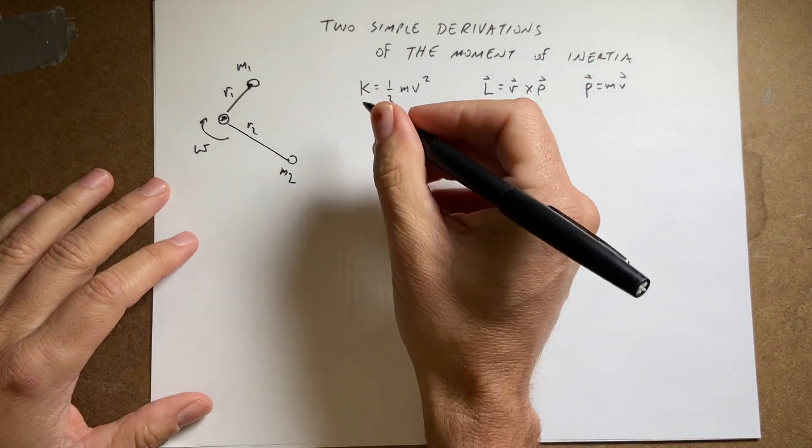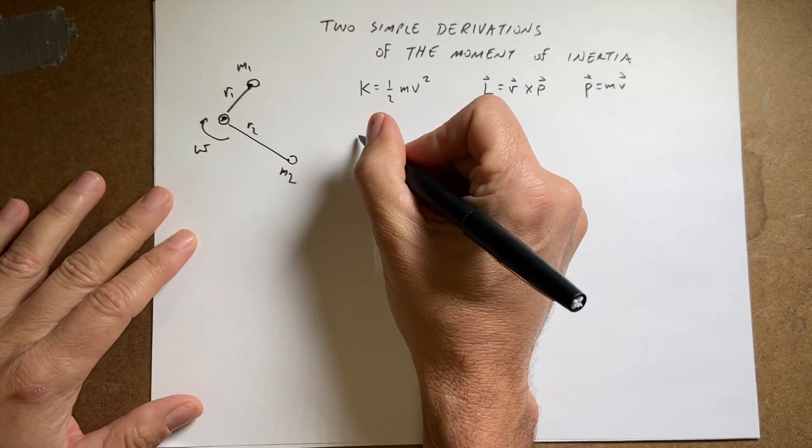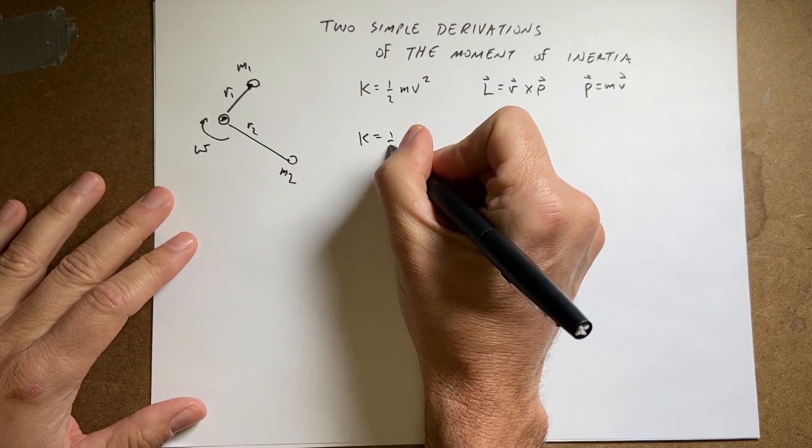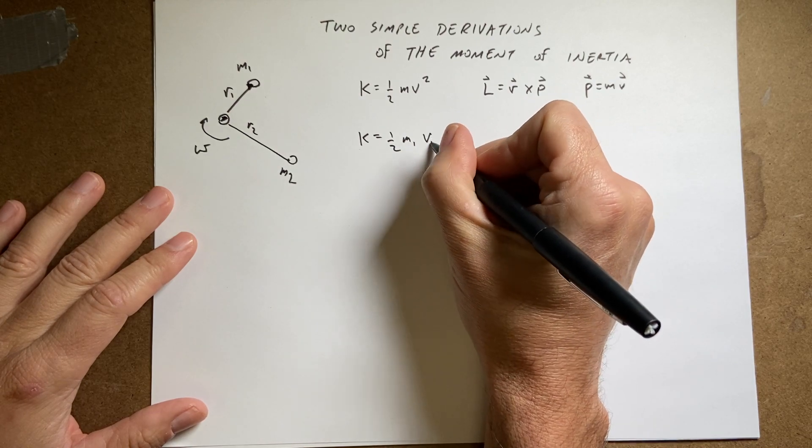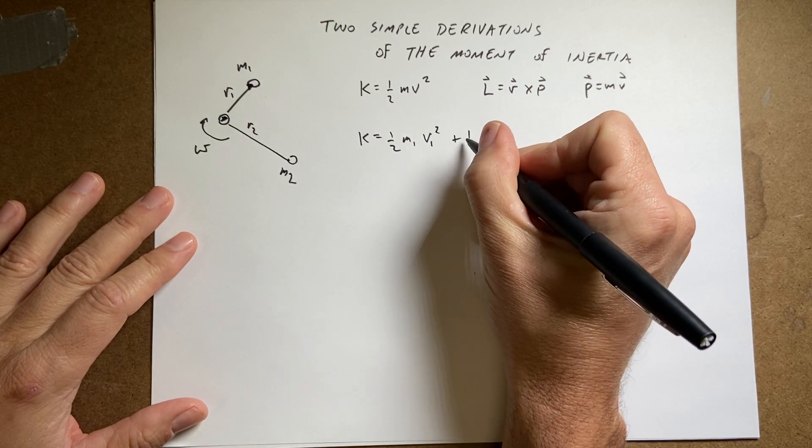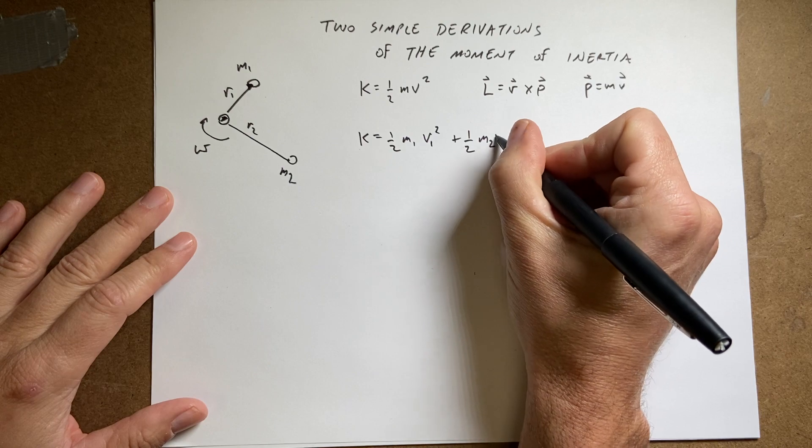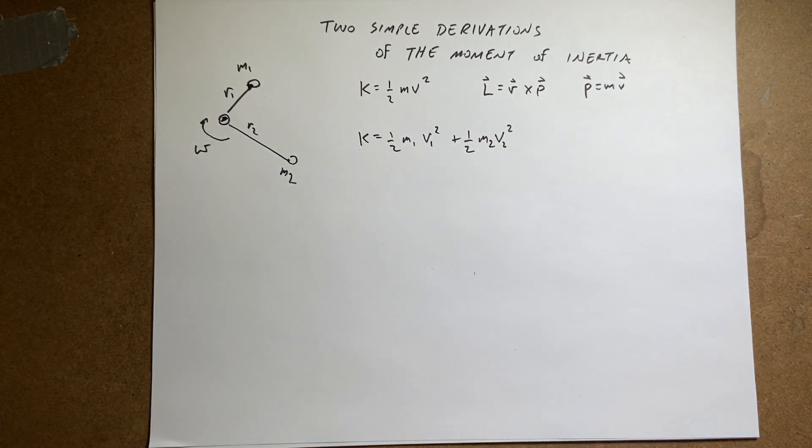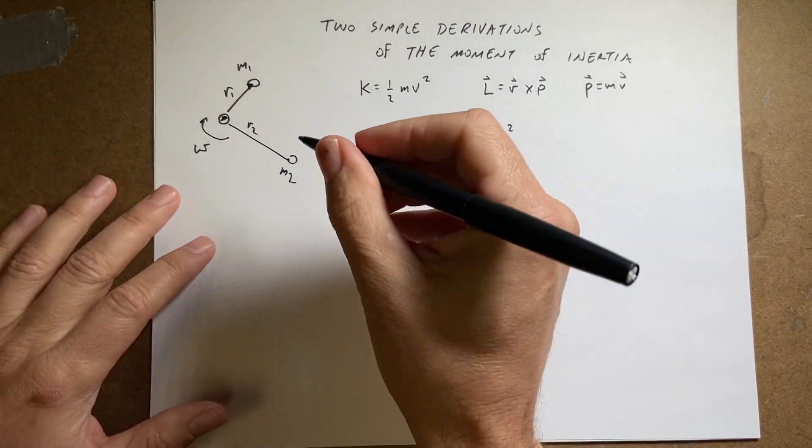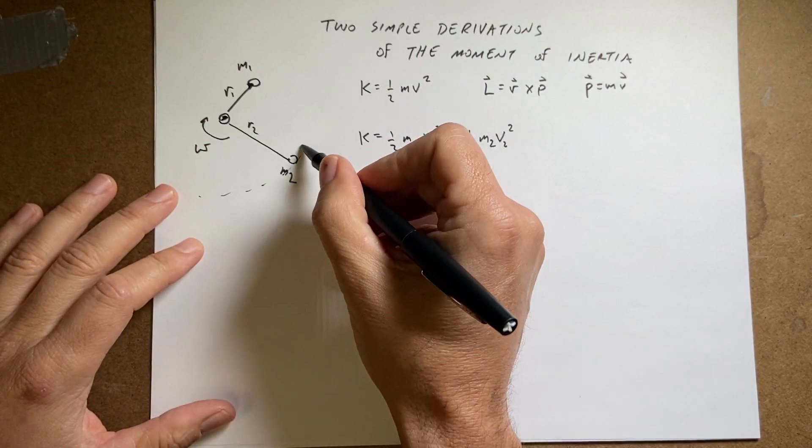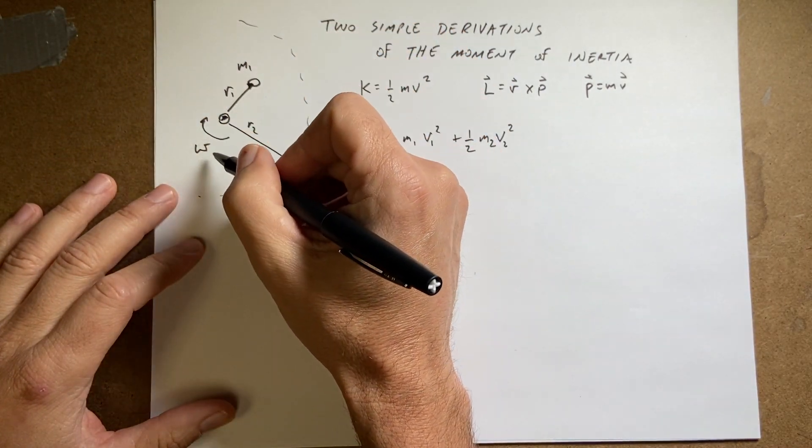So if I want to find the kinetic energy, I could say the kinetic energy of the system is going to be one half m1 v1 squared plus one half m2 v2 squared. So that is something that I know is true. So in this case, this one is moving in a circle, and this one's moving in a smaller circle.